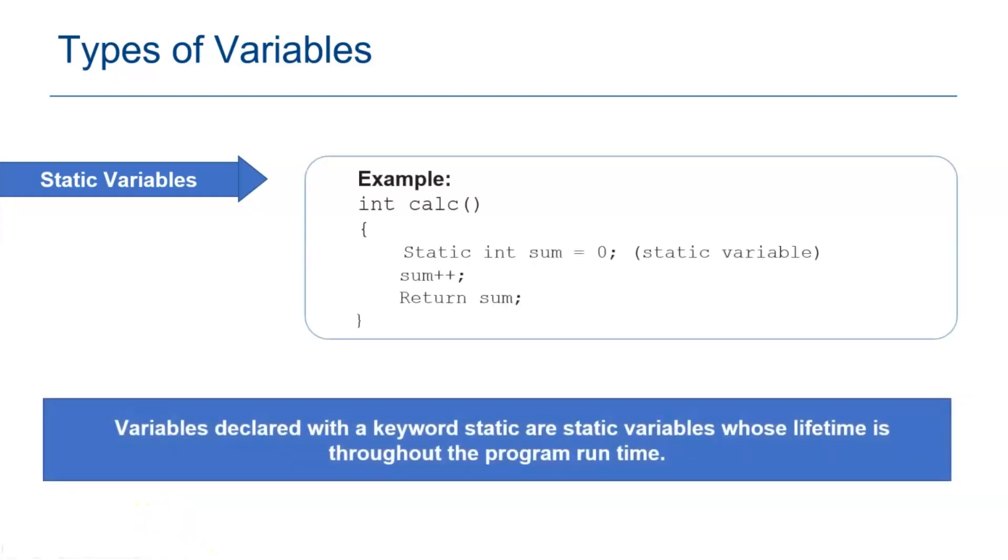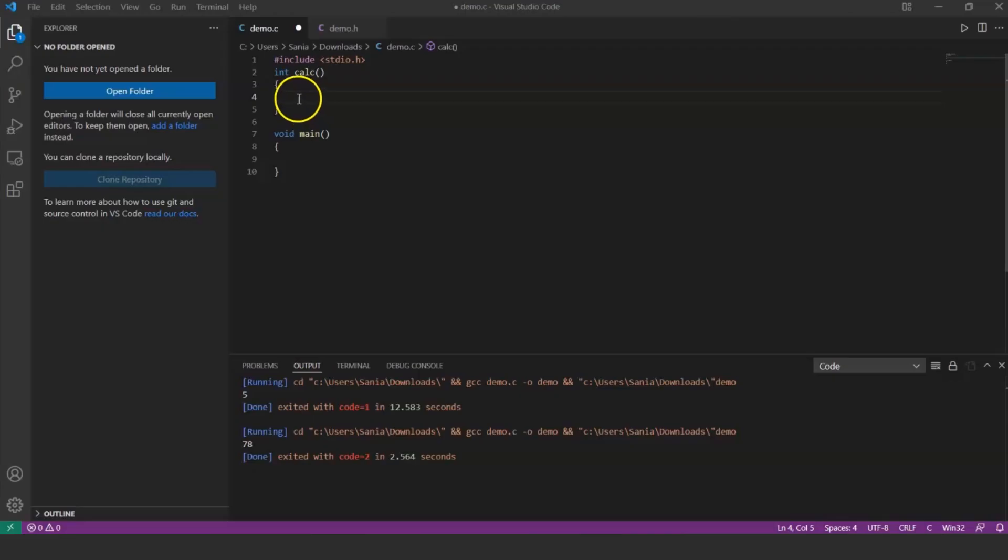Next, variables declared with the keyword static are static variables, whose lifetime is throughout the program runtime. As you can see in this example, static is a keyword used to declare a variable sum. Let's execute a simple program using static keyword. Inside the function calculate, let's declare the variable sum with static keyword and initialize the value to 0. Sum plus plus to increment the value of sum by 1, return sum.